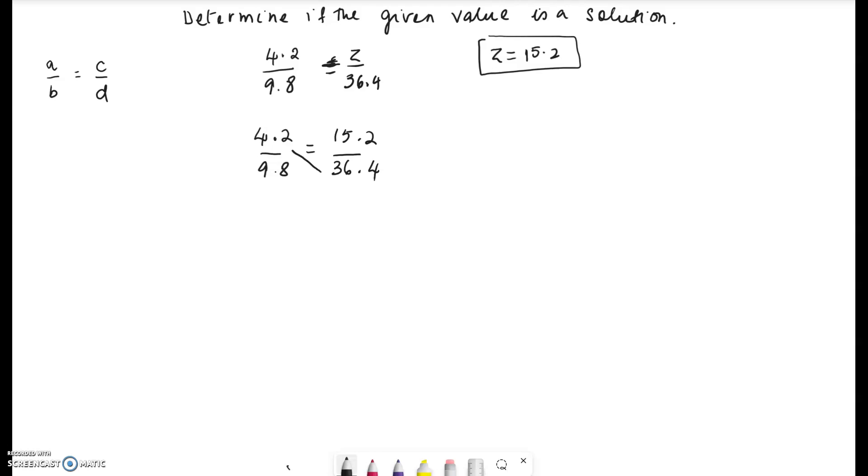One way of checking would be to cross multiply the numbers. So 4.2 times 36.4, we want to check if it's equal to 15.2 times 9.8. If these two quantities are equal, then we can conclude that the proportion is valid, which means z equals 15.2 is a solution for this proportion.